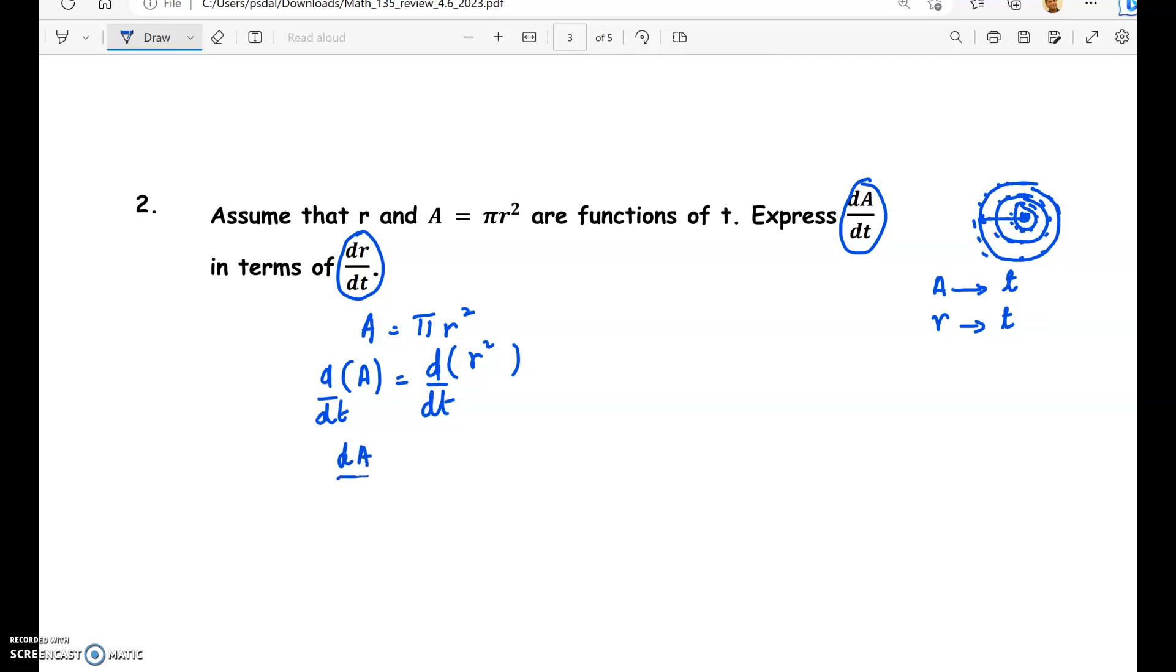So dA by dt is equal to pi times d by dt of r squared. Remember that pi is a constant. Now we are going to differentiate r squared not with respect to r. So dA by dr of r squared is 2r, but what is d by dt of r squared? So we use the chain rule. So first we differentiate r squared with respect to r. So we get 2r times the derivative of the inner function which is r with respect to the variable t. So this is just the chain rule. So we have 2r dr by dt.